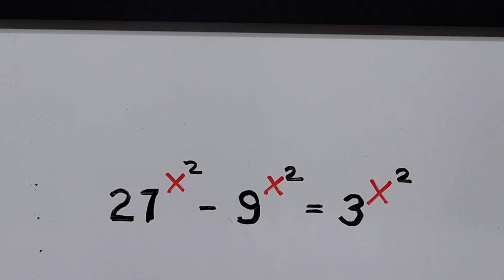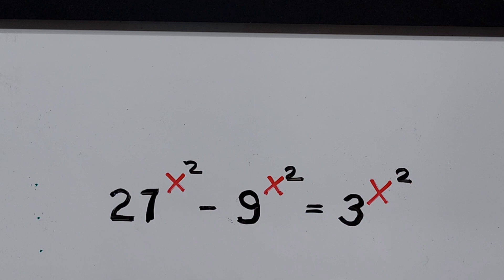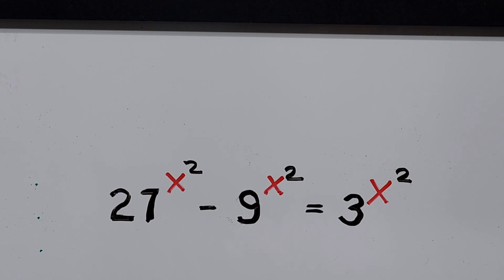Hello everyone. We have here an exponential equation: 27 to the power of x squared minus 9 to the power of x squared equals 3 to the power of x squared. We'll be solving for the value of x that satisfies the equation. For those new to my channel and those who have not subscribed yet, I would appreciate it if you can hit the like button and subscribe for more exciting videos. Thank you very much, and now let's start solving.